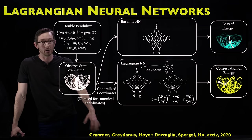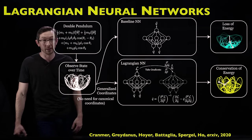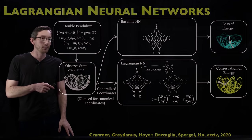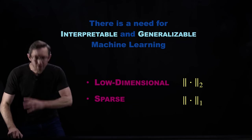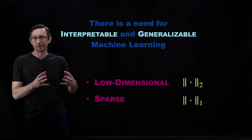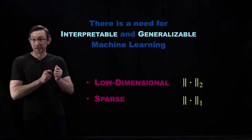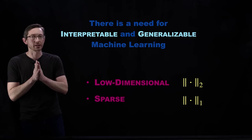They always make their code open and available so you can download it and try it yourself. There are other ways we can add physics into machine learning models through choices of loss functions and architectures.